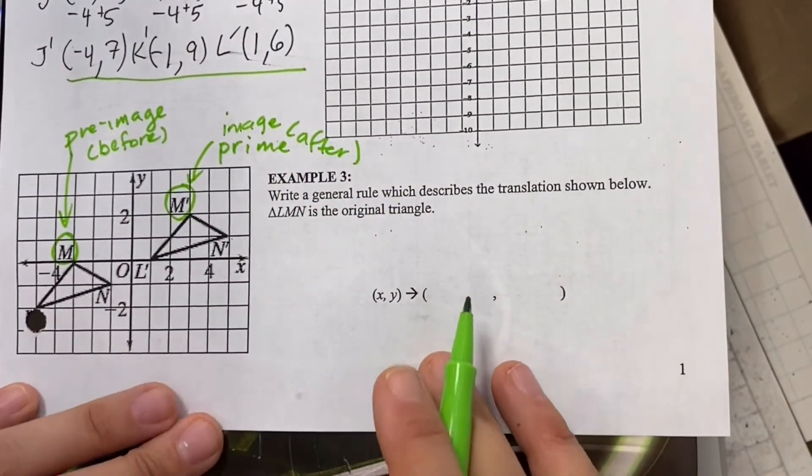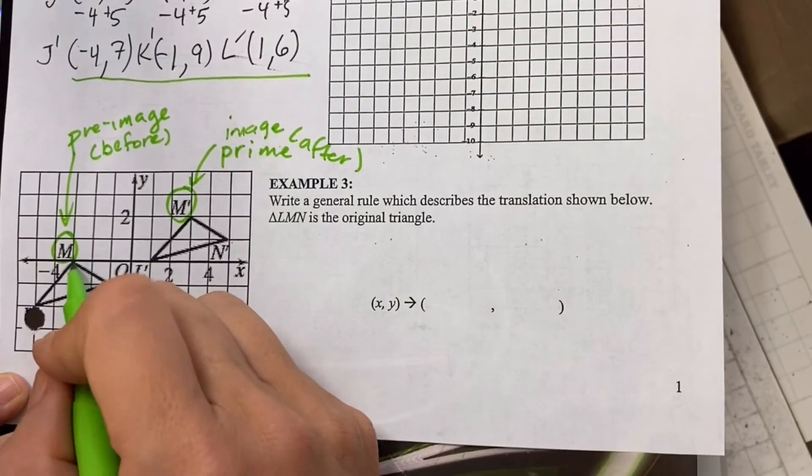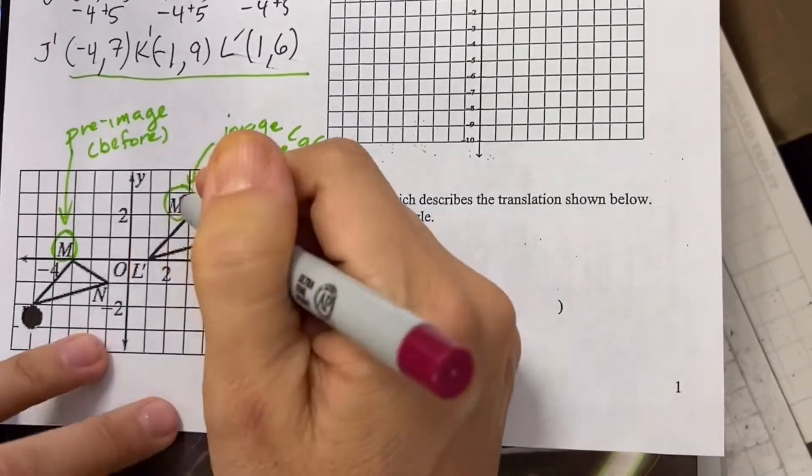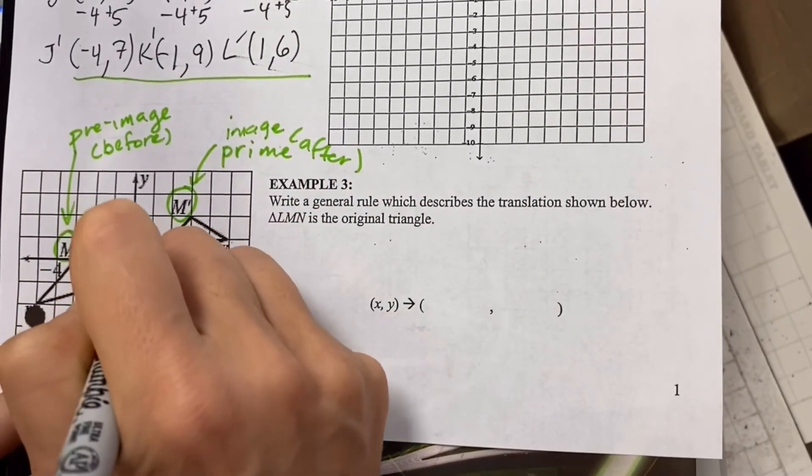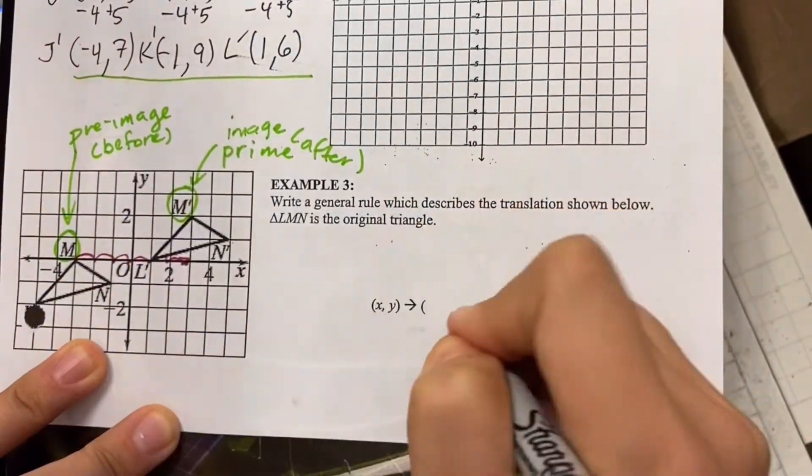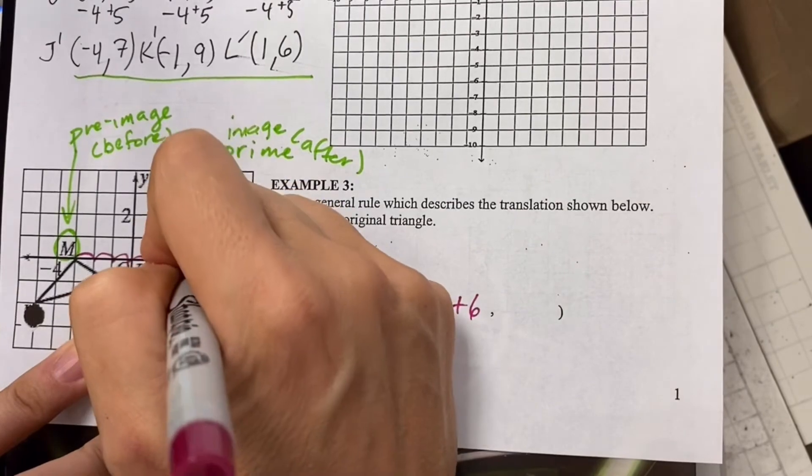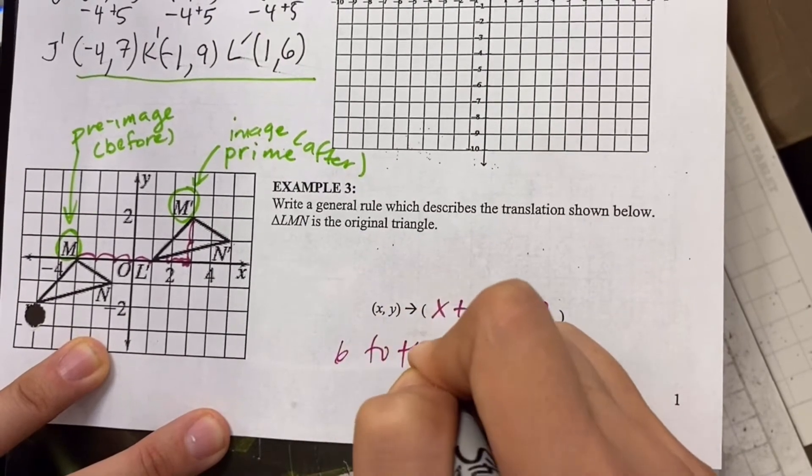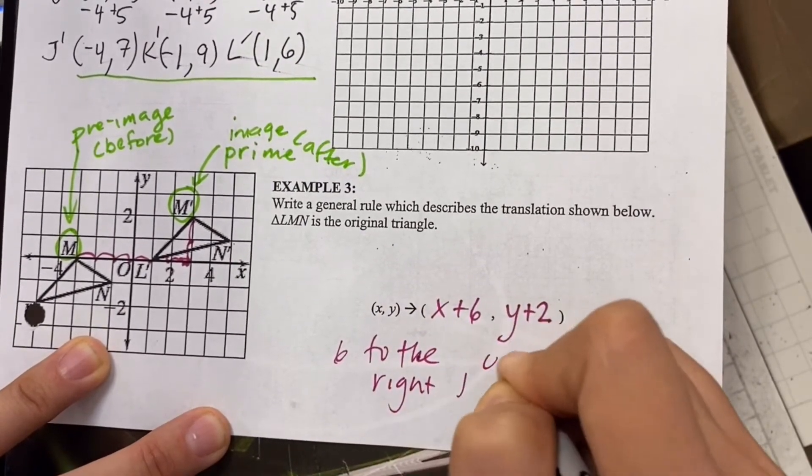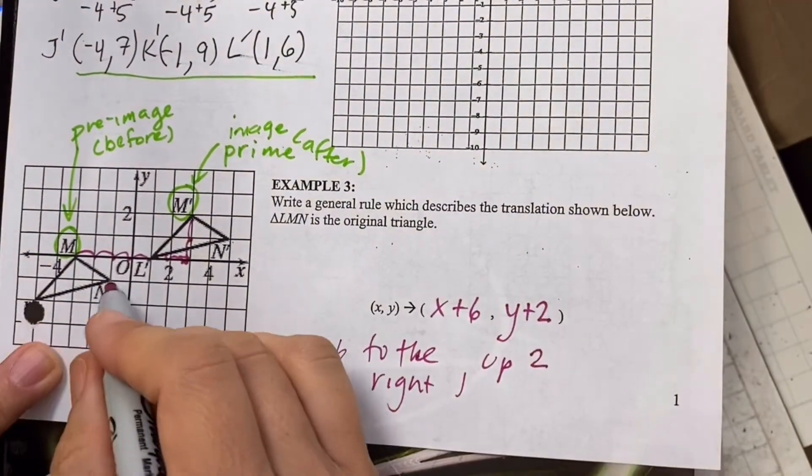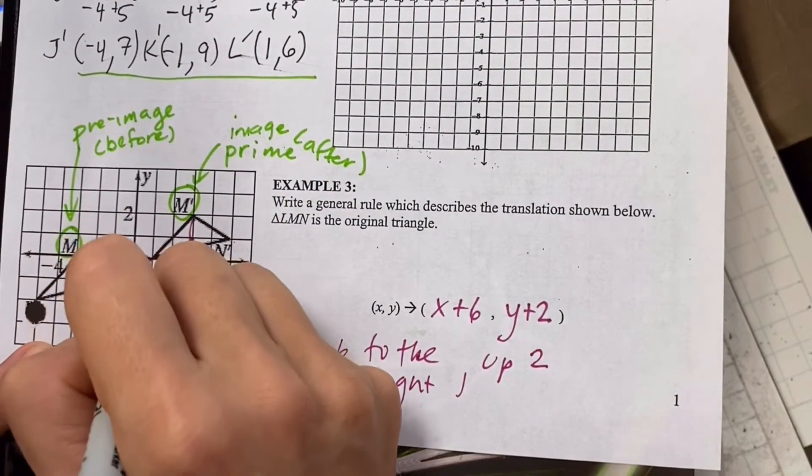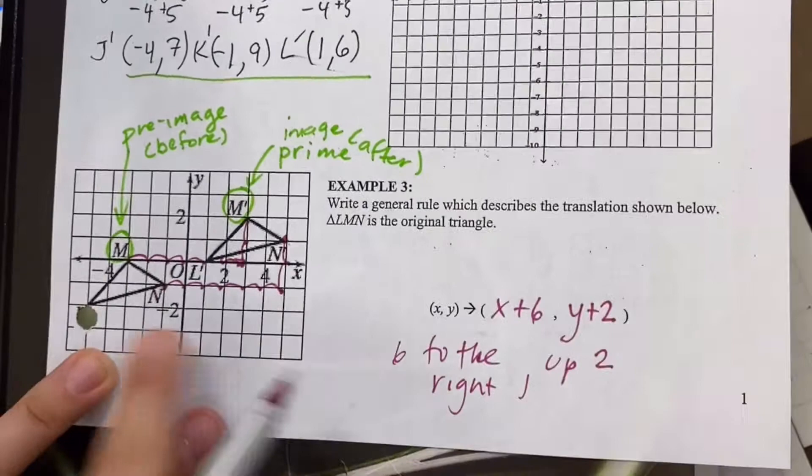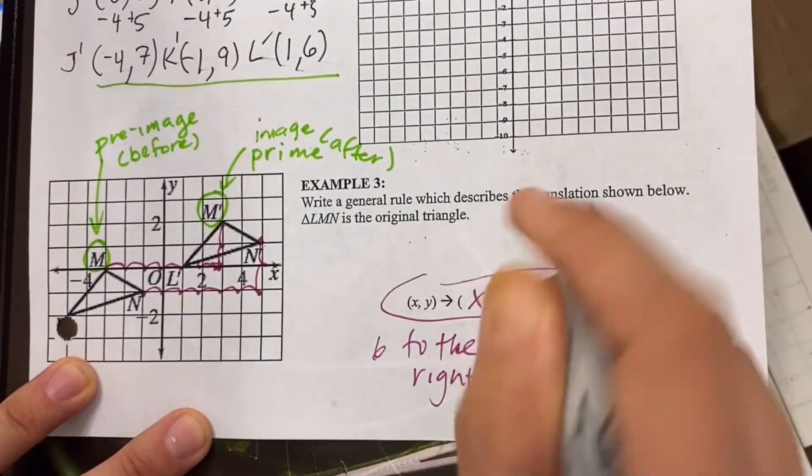Now a general rule, it was here, now M is over there. So let's figure out how it got there. It looks like it went one, two, three, four, five, six to the right. So six to the right, one, two, and up two. Six to the right and up two. We can double check. Did it go six to the right? One, two, three, four, five, six, up two, one, two. Yep. Now my three-hole punch blotted that out, but this is looking good.